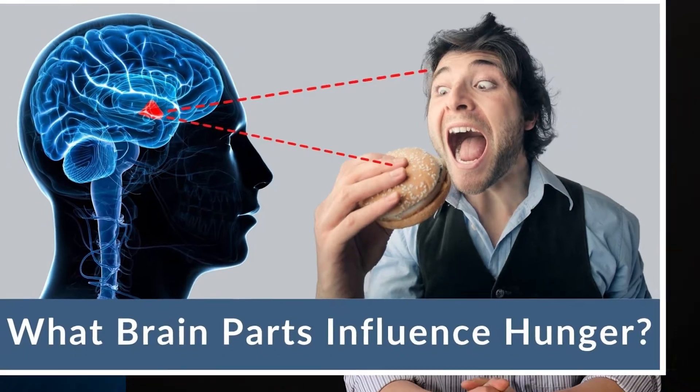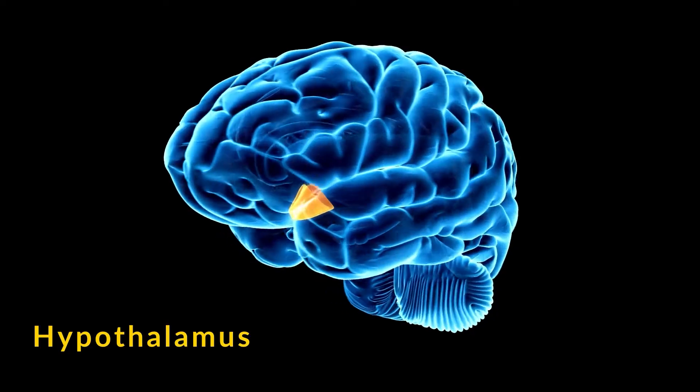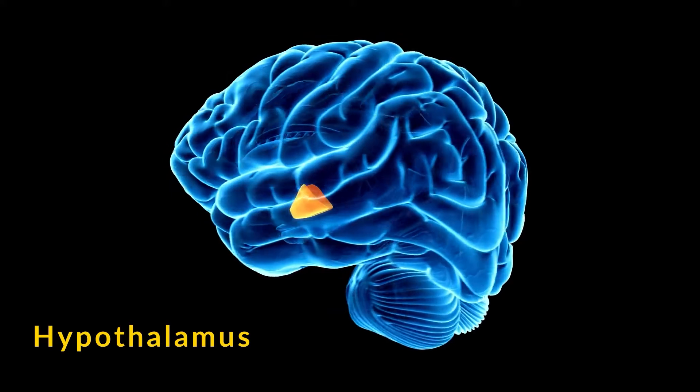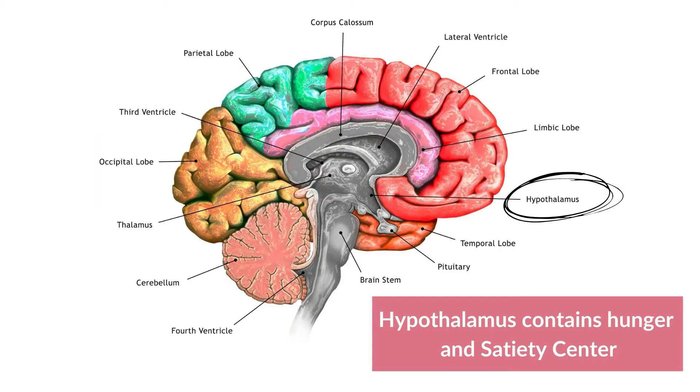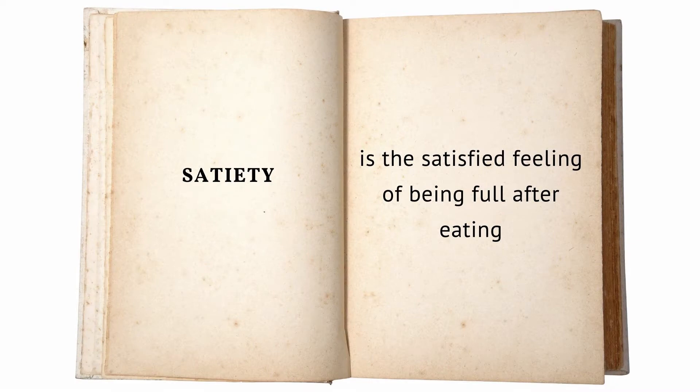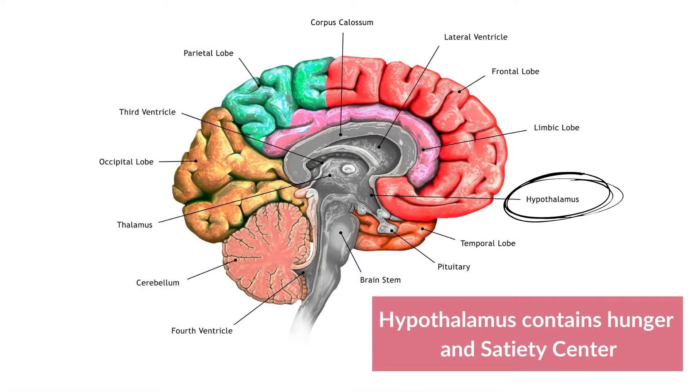The brain parts that influence hunger is mostly the hypothalamus. There are other brain parts, but generally the hypothalamus is the main area that has the satiety center. The satiety center, a satisfaction center, is located just under your frontal lobes.